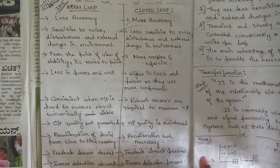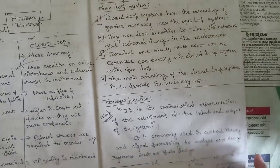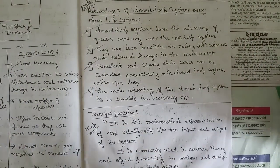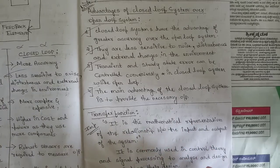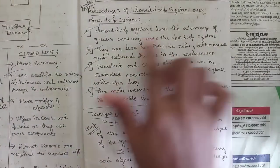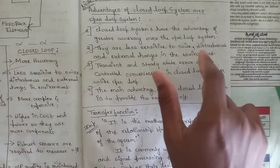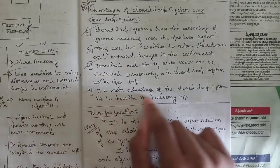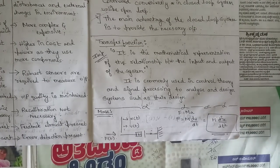In open loop, feedback element is absent and error detection is absent; in closed loop, feedback is present and error detection is present. The advantages of closed loop over open loop: closed loop has greater accuracy, is less sensitive to noise, disturbances, and external environmental changes, and transient and steady-state error can be controlled conveniently. The main advantage of the closed loop system is to provide the necessary output.